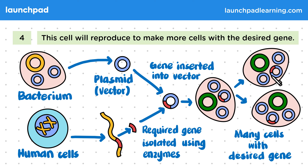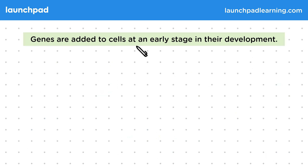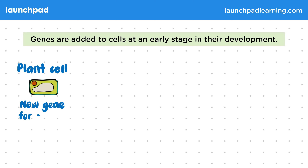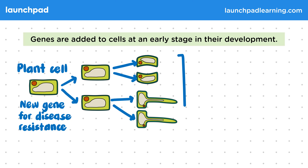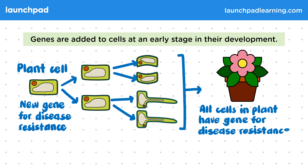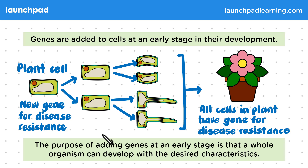The genes are added at an early stage of development in these cells. Genes are added to cells at an early stage in their development. Let's say that we start with a plant cell that's been modified to contain a new gene that makes it resistant to a type of plant disease. We're going to allow this cell to multiply and develop into many different types of cells. All of these cells will form part of a new plant in which all of the cells have the new gene. Modifying a cell in an already mature plant would mean that only a section of this plant would contain the gene rather than the entire plant. You are expected to explain this idea in the exam. The purpose of adding genes at an early stage is that a whole organism can develop with the desired characteristics.